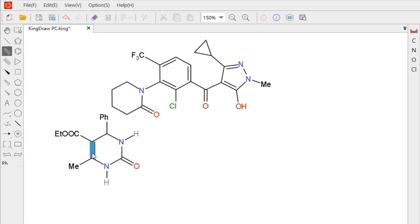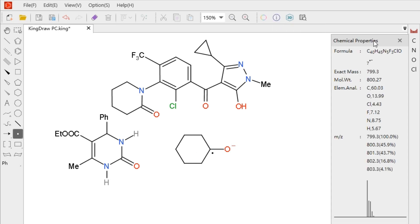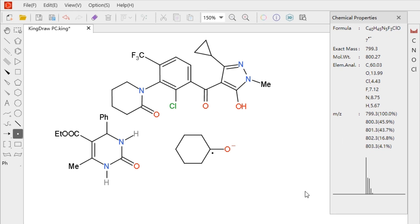When there are multiple structures on the canvas, we do not perform any operations and directly click chemical properties. And all structure properties are displayed in the window.